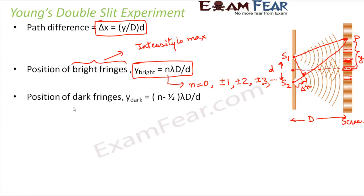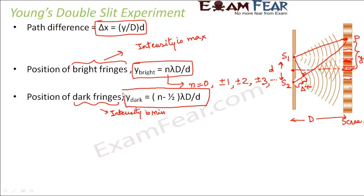Similarly, you will also have dark fringes, which correspond to positions where the intensity is minimum. The position of dark fringes is given by y equals (n − 1/2)·lambda·D/d, where the value of n starts from ±1, ±2, ±3 and so on — because at the center you cannot have both a bright and dark fringe; only a bright fringe exists there.